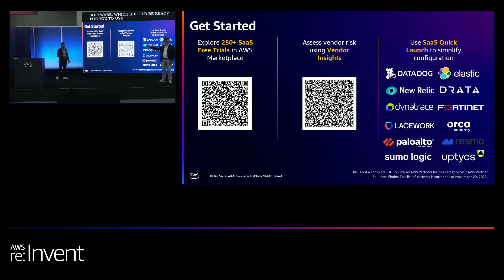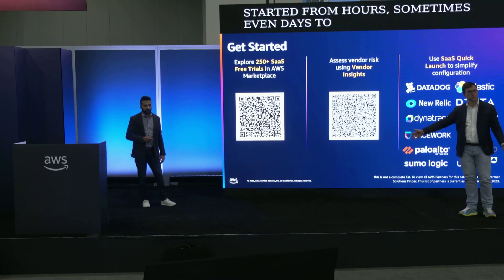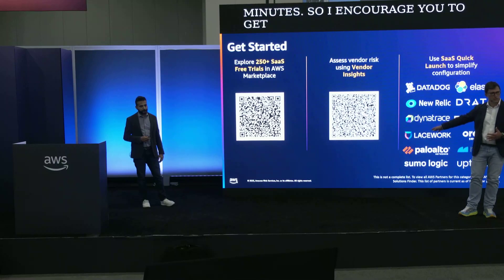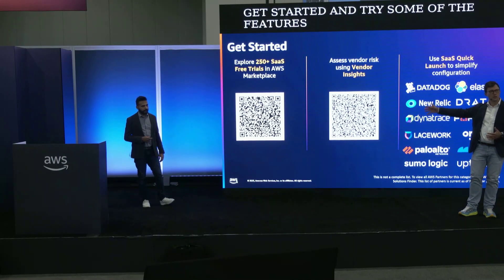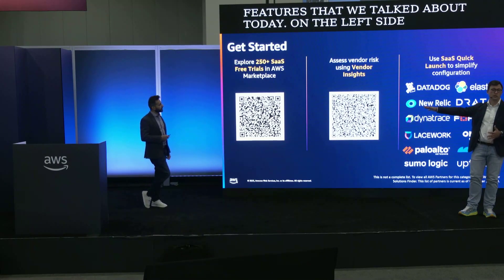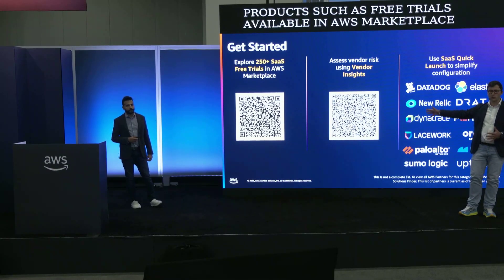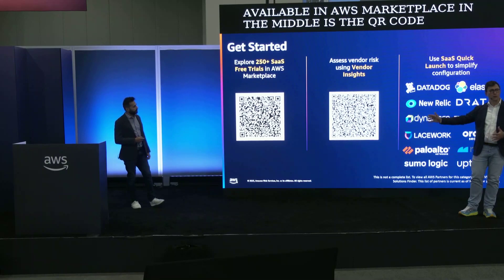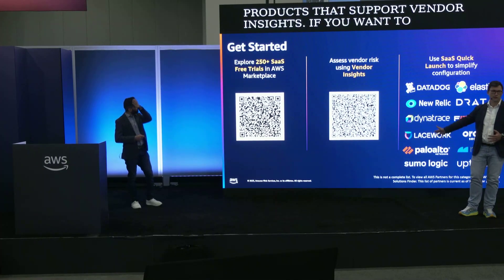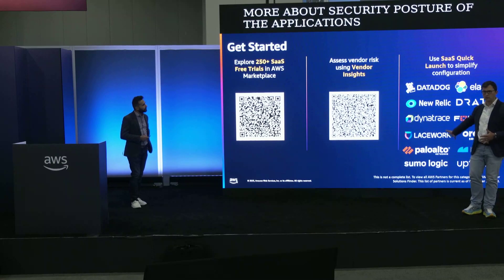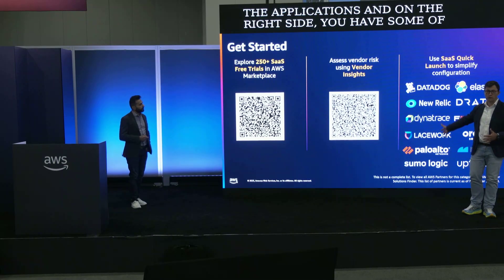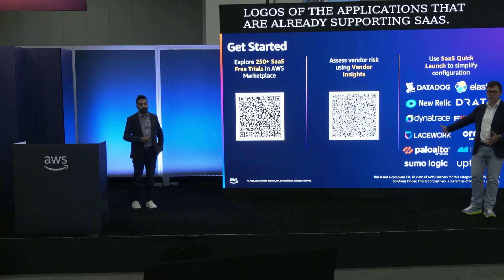We heard from our beta customers that Quick Launch reduces the time to get started from hours — sometimes seven days — to just five minutes. I encourage you to get started and try some of the features we talked about today. On the left side is a shortcut to all the free trial products — SaaS free trials available in AWS Marketplace. In the middle is the QR code for products that support Vendor Insights if you want to learn more about security posture of applications. And on the right side you have logos of applications that are already supporting SaaS Quick Launch, which you can deploy in just minutes and clicks.